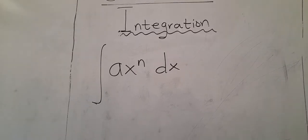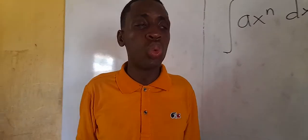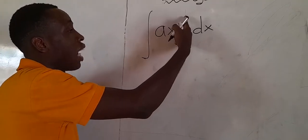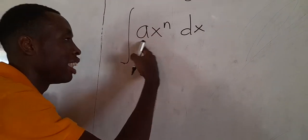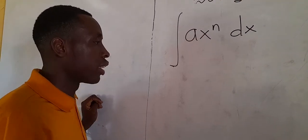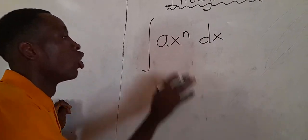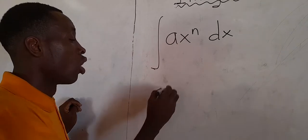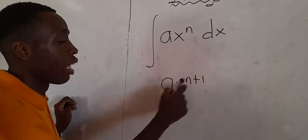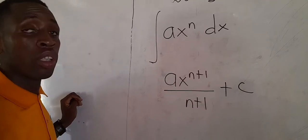The first thing we will learn is the simple integration rule. When you are asked to integrate any function, you add 1 to the exponent and divide the whole function by the result from that addition. So for the integral of ax^n dx, we add 1 to the exponent to get n+1, then divide the function by that. This is very simple.